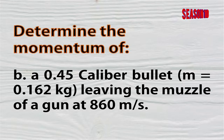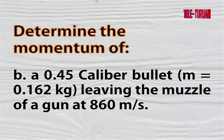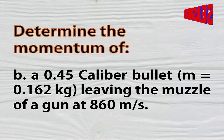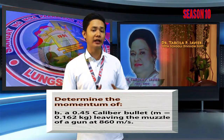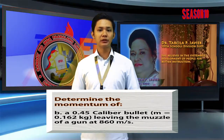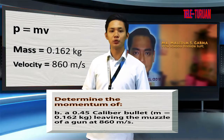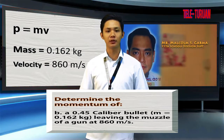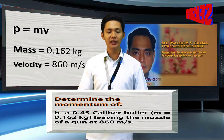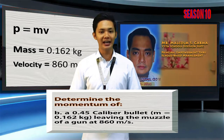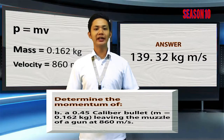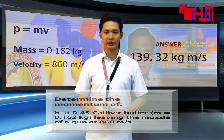For problem letter B, determine the momentum of a 0.45 caliber bullet with a mass of 0.162 kilogram, leaving the muzzle of a gun at 860 meter per second. Similar to problem letter A, identify the given values, substitute them into the general formula and solve. Mass is equal to 0.162 kilogram and velocity is 860 meter per second. The answer is 139.32 kilogram meter per second.